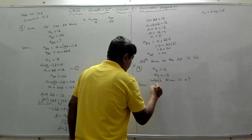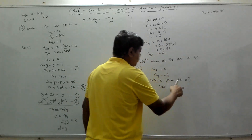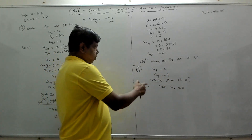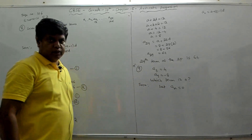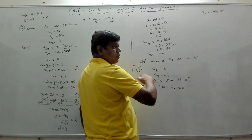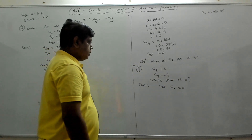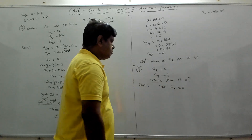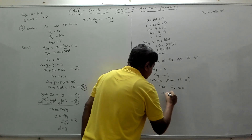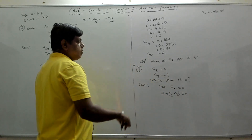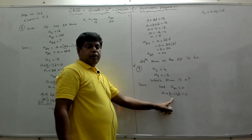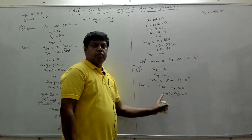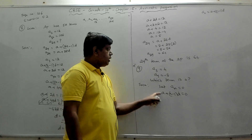We assume the nth term is 0: let an = 0. So a + (n−1)d = 0. Our aim is to find n. To find n, we need a and d. We use the two given conditions — a3 = 4 and a9 = −8 — to get two equations.